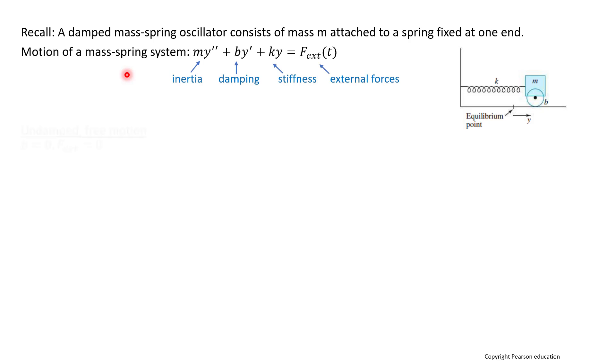So we've learned this in the past, and now we want to talk about undamped free motion. So the damping factor would be zero, and then our external forces would also equal zero. And so then this second order differential equation can be rewritten as mass times the second derivative plus k, which is the stiffness of the spring, times our equation y equals zero.